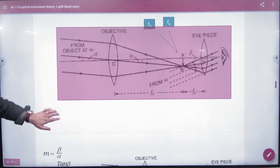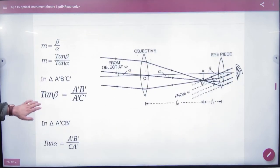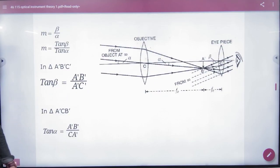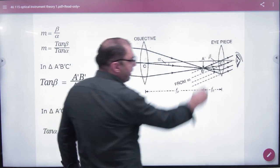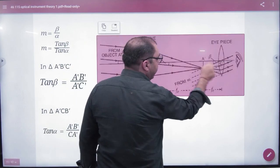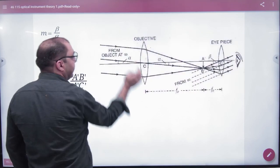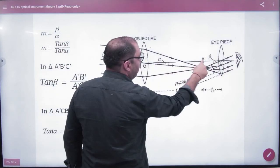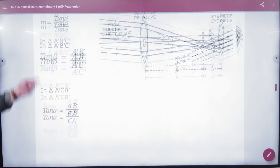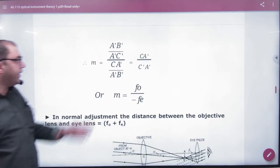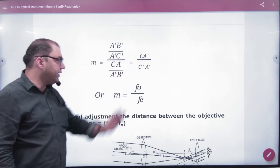So in this diagram, what do you have to do? You have to remove its magnification, tan beta by tan alpha. So take a look at the angle of the object, alpha. This is also alpha. What is the angle of the image? What will be tan beta? A dash B dash by A dash C dash. This will be tan beta. What will be tan alpha? A dash B dash divided by A dash C. So divide them. A dash B dash cancel. C A dash by C dash A dash.